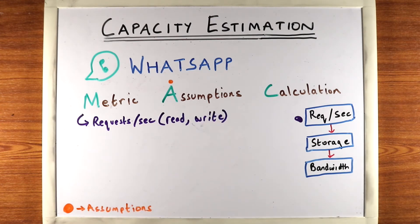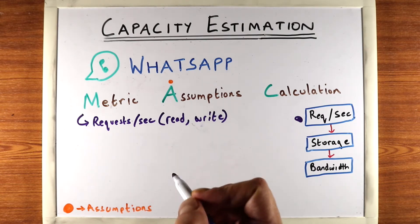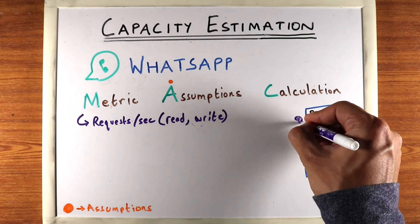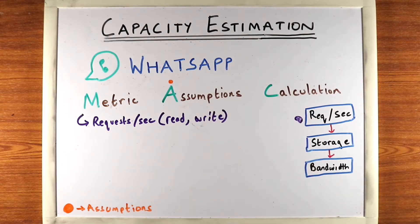Now it also depends on the interviewer. If the system is read-heavy — for example, something like YouTube — then you might just calculate the read requests first and then ask the interviewer if they also want you to calculate the write requests. A lot of times the interviewer might say it's okay. Try to minimize this capacity estimation as much as possible during the interview by talking to the interviewer about it.